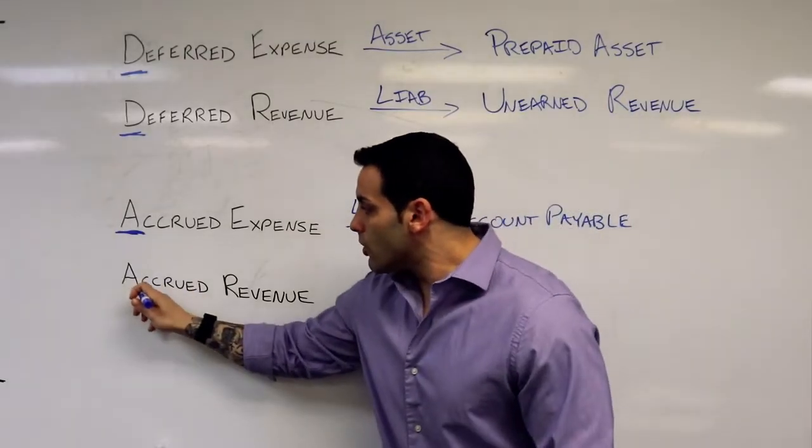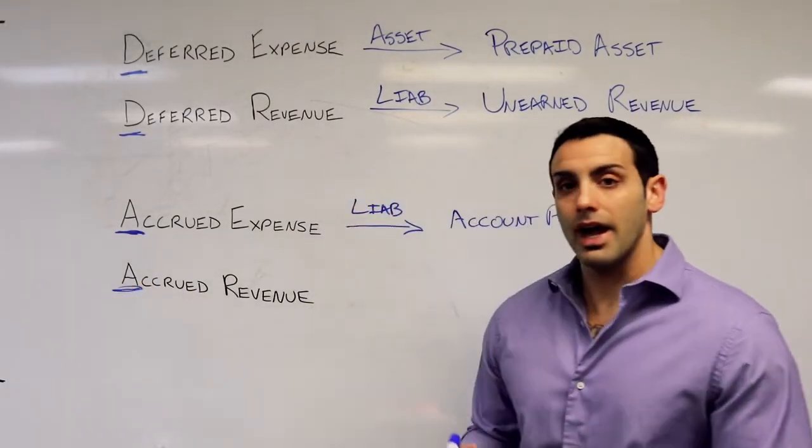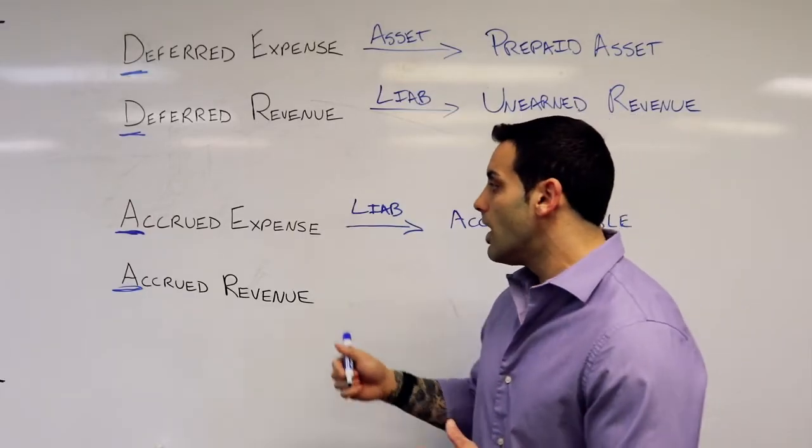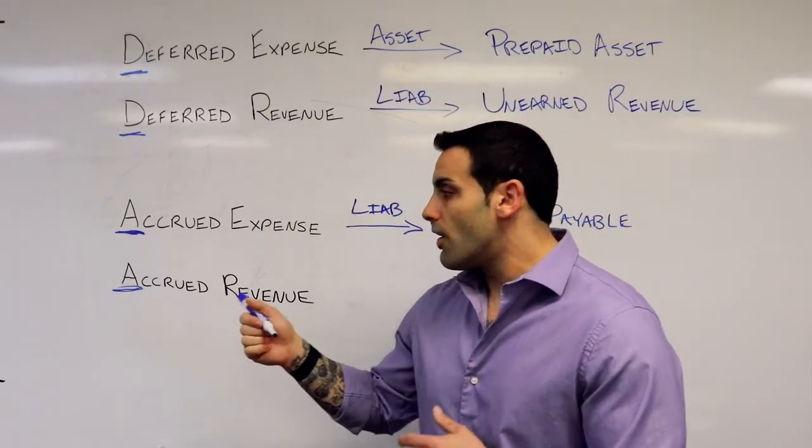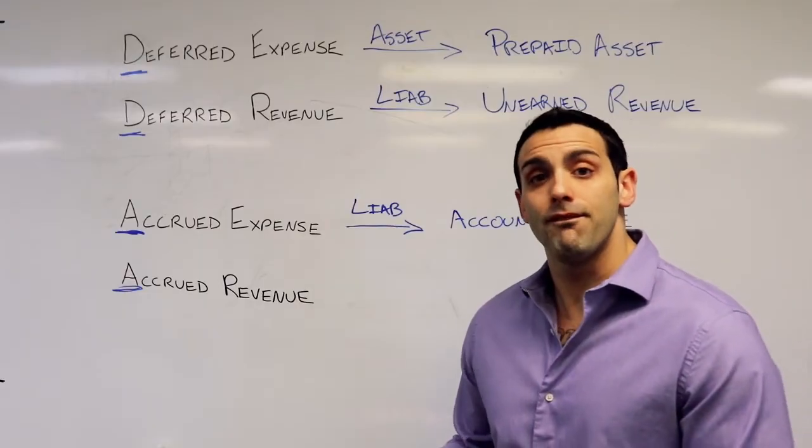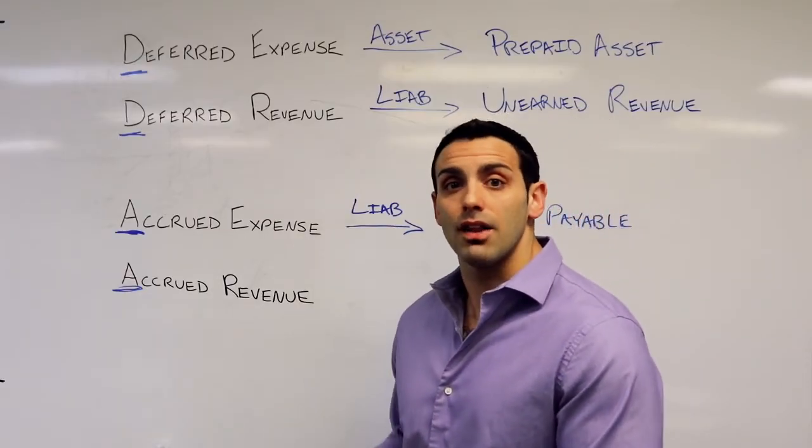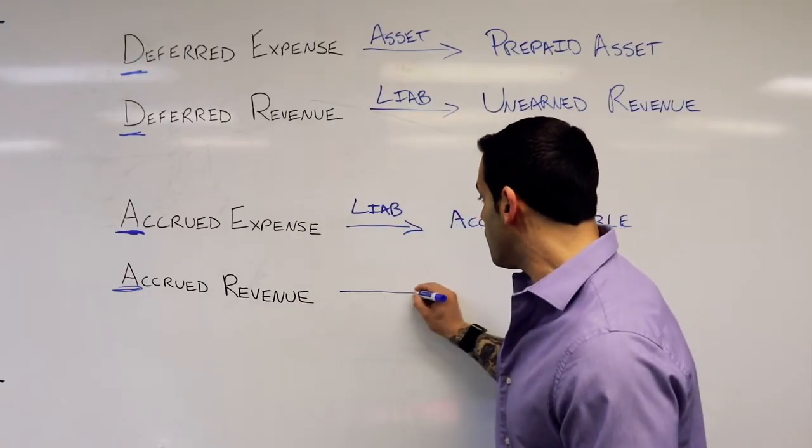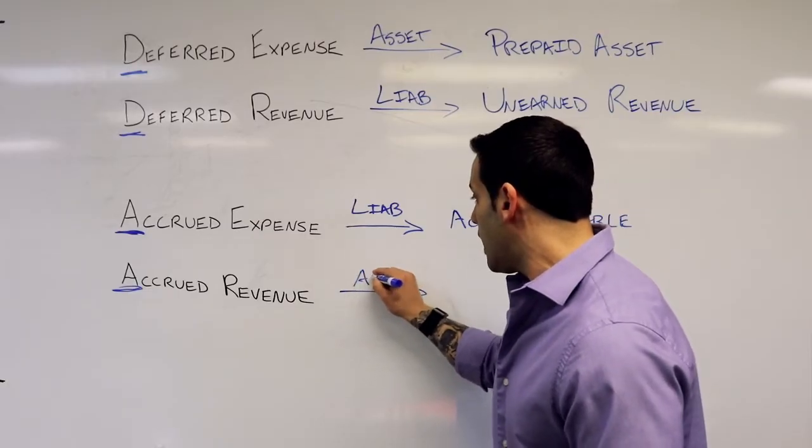Accrued revenue: action before dollars. I earned revenue before I received the dollars for it. This is going to be an asset, an account receivable, because my clients still need to pay me.